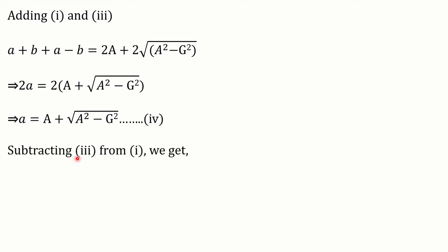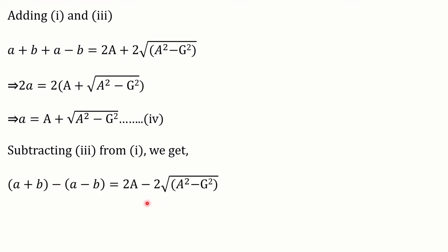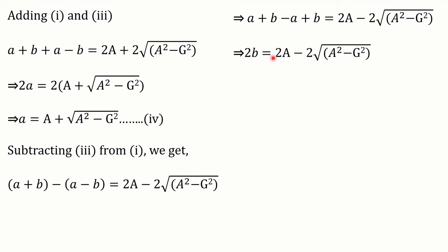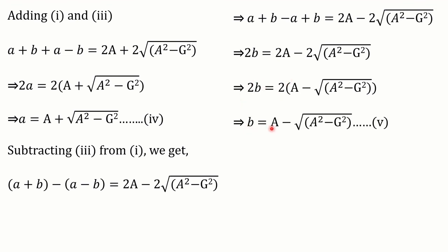Now let's subtract equation 3 from equation 1. On simplification, we get 2b = 2A - 2√(A² - G²). The 2s can be taken common and then cancelled. So ultimately, b = A - √(A² - G²), which is equation 5.